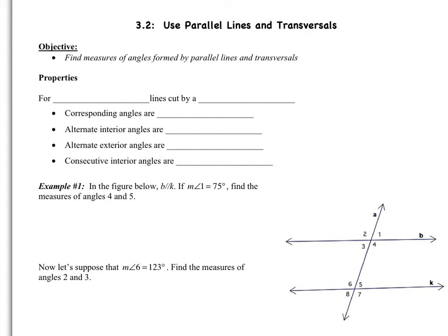Welcome to section 2 of chapter 3. Today we're going to use parallel lines and transversals. In the first video, we learned about all the different types of angles created by transversals. Today we're going to learn about some of the properties and then introduce parallel lines as well. You should be on pages 7 and 8 in your packet. So: properties for parallel lines cut by a transversal.